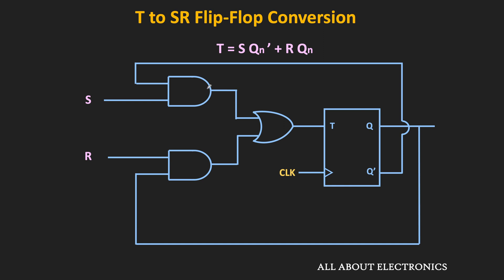In the logic circuit, the first AND gate produces the term S·Qn', the second AND gate produces R·Qn, and the OR gate gives the summation of these two terms. The output of the OR gate is then given as the input to the T flip-flop. In this way, we can convert the T flip-flop into the SR flip-flop.